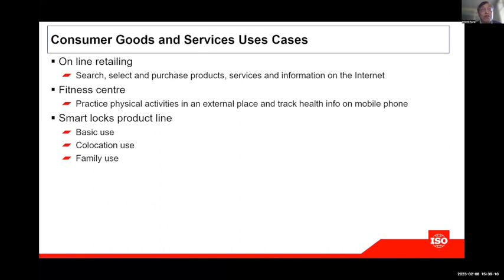People use laptops, tablets, and smartphones to buy things on the internet — this is a mainstream application, perhaps like social networks. The second use case is about a fitness center, where you practice physical activities externally. The interesting thing is it involves two organizations: the fitness center and the organization providing a smart health application. The third is on smart locks, highlighting the product line approach. We identified three configurations: basic use, colocation use, and family use, each with different privacy concerns.